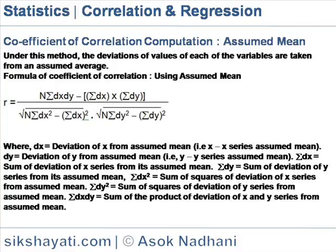Σdx² is the sum of squares of the deviations of the x series from the assumed mean. Σdy² is the sum of squares of the deviations of the y series from the assumed mean. Σdx·dy is the sum of the product of deviations of the x and y series from the assumed mean.